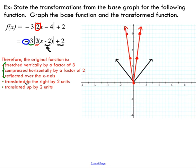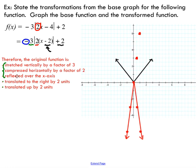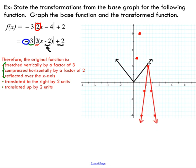After stretching vertically and compressing horizontally, I've got a much thinner function. Next I apply the reflection over the x-axis — I simply rotate the function, and you can see I end up with a downward-opening V shape. That takes care of the first three transformations. Now I translate the function right by 2 and up by 2. Counting from the origin — moving one, two to the right, then one, two upward — and all the points move with the function.